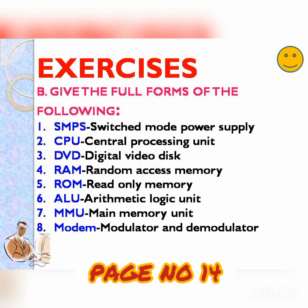Then number B: give the full forms of the following — SMPS, CPU, DVD, RAM, ROM, ALU, MMU, and modem. Carefully write the spellings. Also refer to the book.